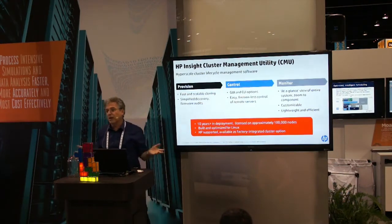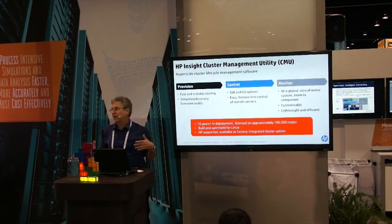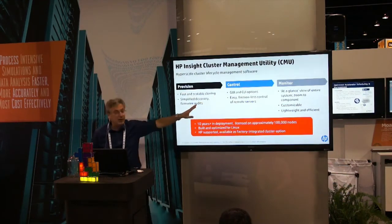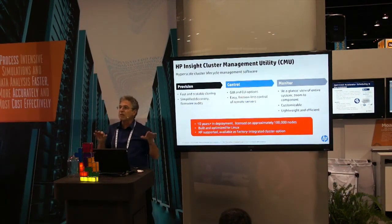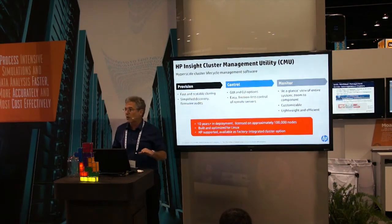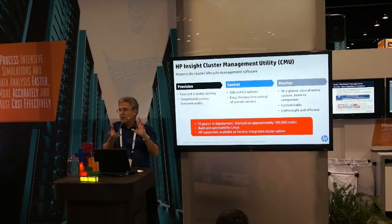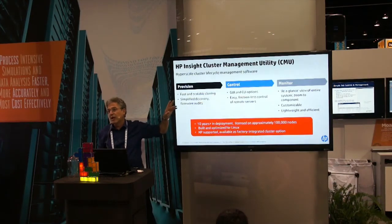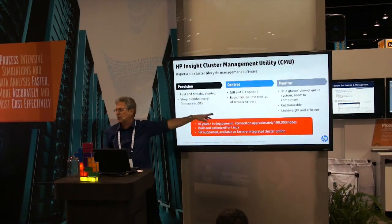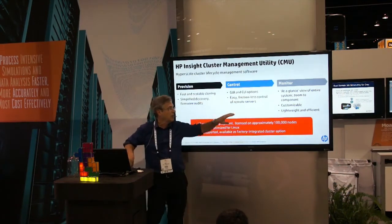On the control side, everything we do has both a graphical interface and a command line interface. The benefit of a graphic interface is that if you don't remember something, it's right there and you can see it. The benefit of a command line interface is it tends to be quicker if you really know what you're doing, and you can also set up scripts with the CLI options. We describe what we do as frictionless control — the minimum number of clicks that it takes to get something done on a cluster is always our goal. For monitoring, it's an at-a-glance view of the entire system — you can zoom in to get the component level and zoom out to see things at the system level. It's customizable and lightweight and efficient.